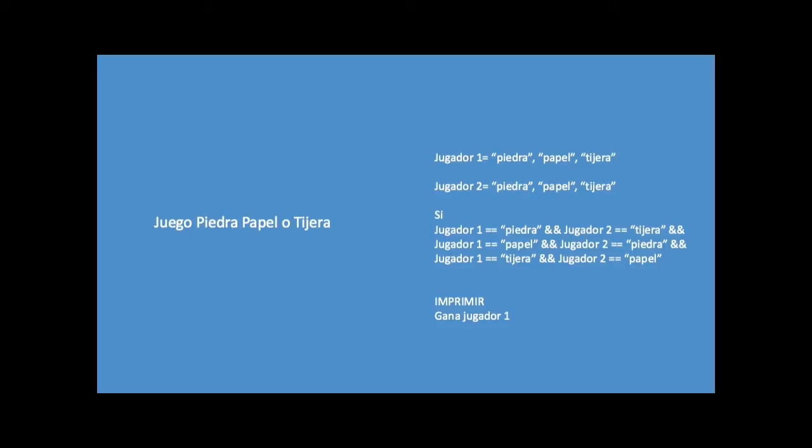Vamos a crear un escenario con todas las posibilidades para que el jugador 1 gane. Tenemos que empezar poniendo las condiciones: si jugador 1 es igual a piedra y jugador 2 es igual a tijera, en esta partida va a ganar el jugador 1. Si jugador 1 es igual a papel y jugador 2 es igual a piedra, el escenario también está creado para que gane el jugador 1. Y en el último, si jugador 1 es igual a papel y jugador 2 es igual a papel, entonces el jugador 1 va a ganar todas las partidas y se va a imprimir un mensaje en la pantalla que diga que gana el jugador 1.